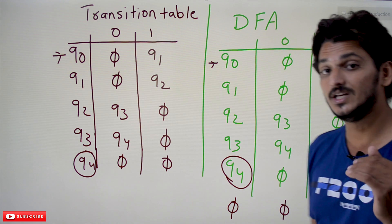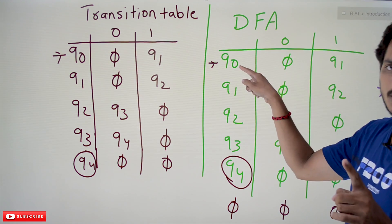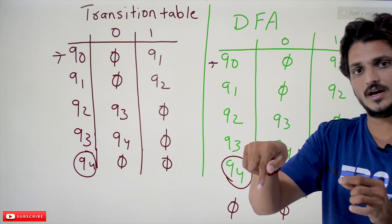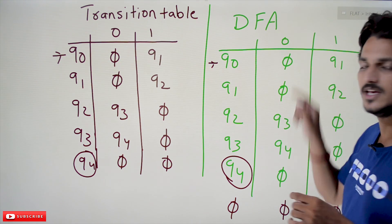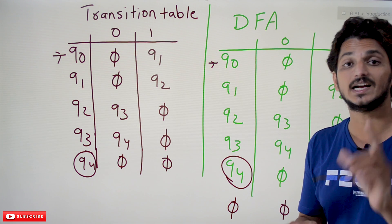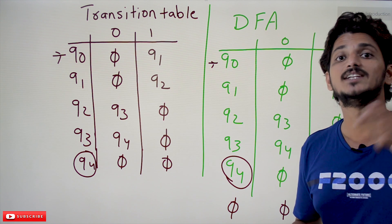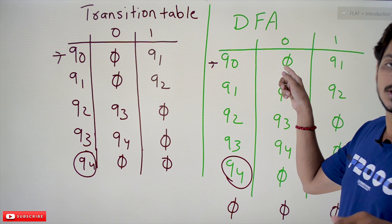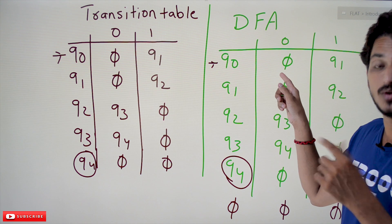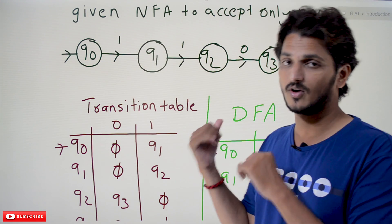Think about the DFA conditions: whatever the state, if you apply an input symbol, you definitely have to move to some other state. But the meaning of Phi here is we are moving to no state, and this is not possible in DFA. That's why we consider Phi as another state — we call it the dead state. We have to write the transition for Phi also in DFA, because Phi means we are considering it as a dead state.